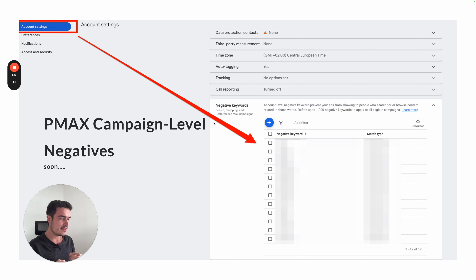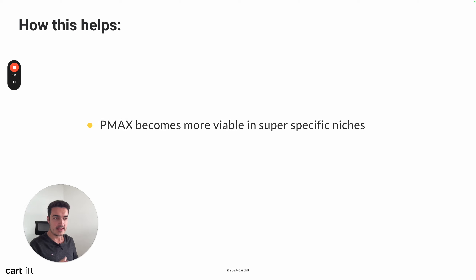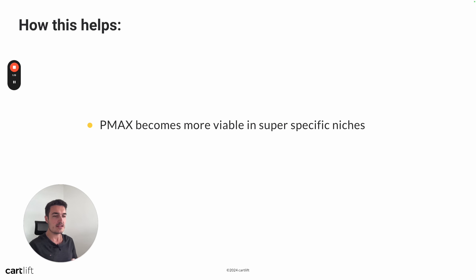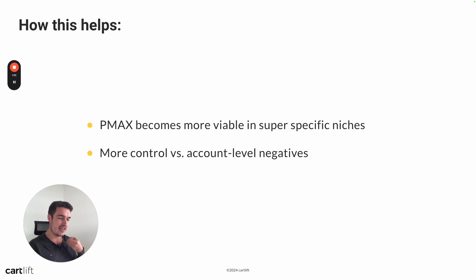That is a way to at least get a little bit of control, but as you can imagine, that is not ideal. So how this might help once Google has implemented it is that PMAX becomes a lot more viable in super specific niches. If you are in a very narrow space and you need negative keywords at the campaign level, this should definitely increase your performance and may enable you to use PMAX campaigns where previously you thought it probably wasn't ideal. Then you will have more control versus the account-level negatives.